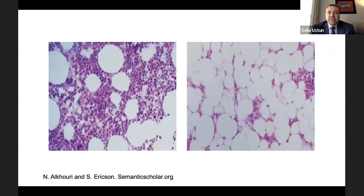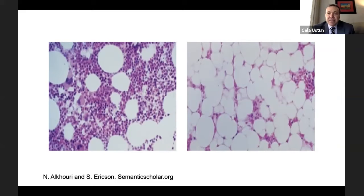Here you can see on the left side one bone marrow biopsy — the purple ones are the normal blood cells and blood-making mother cells. On the right-hand side, you can see all white — those are fat cells, a fatty bone marrow with no blood-making cells, which obviously represents a bone marrow failure disease.